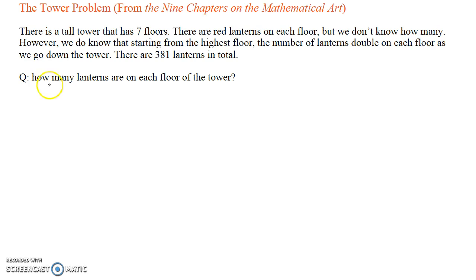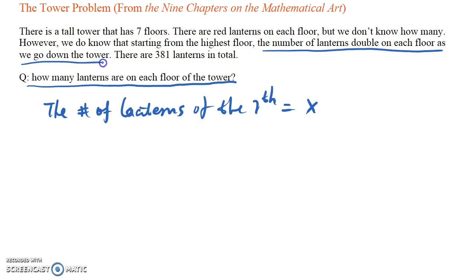The question asks, how many lanterns are on each floor of the tower? To solve this problem we will use an equation. Let's set the number of lanterns on the highest floor, the seventh floor, to x, because the number of lanterns on the highest floor is the least among all floors. And because the number of lanterns double on each floor as we go down the tower, we can find that the second to highest floor must have 2x lanterns.